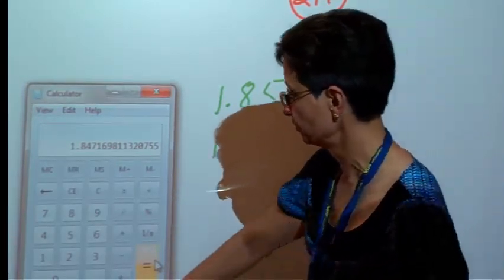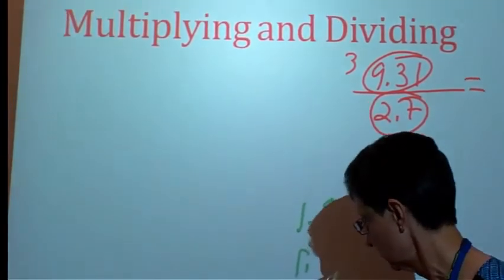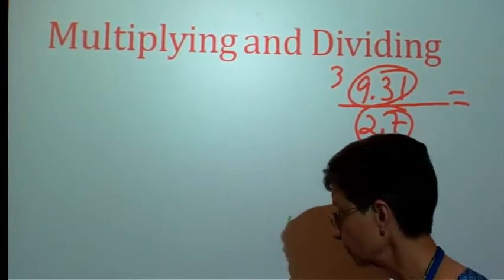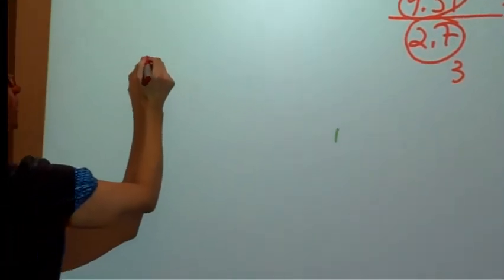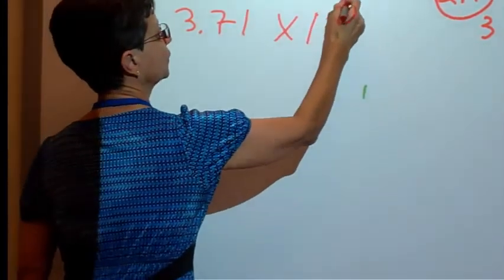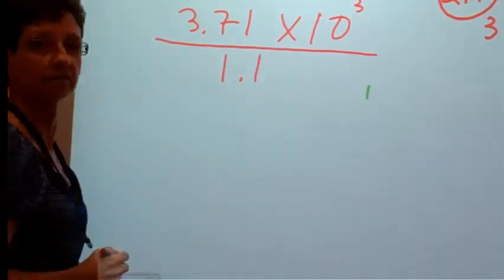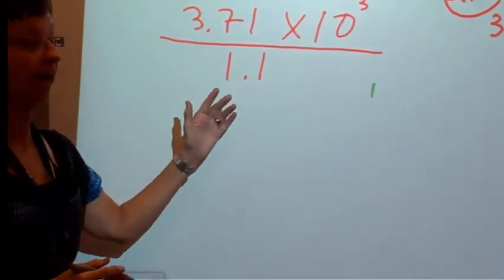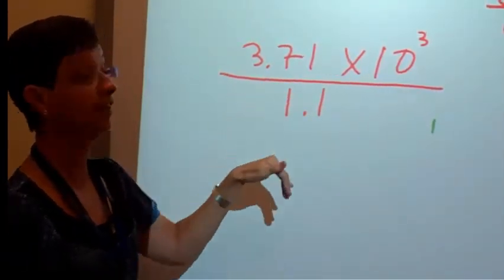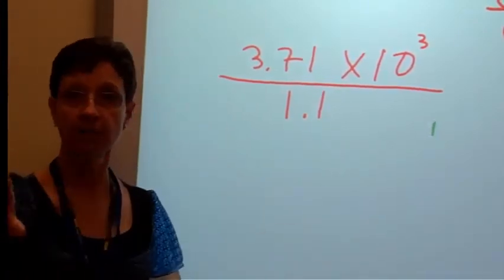One more thing I'd like to do. What if we're working with scientific notation? Say we have a number of 3.71 times 10 to the third. And we're going to divide this number by 1.1. My answer will be, I can't use my calculator here because this calculator doesn't do scientific notation, unfortunately. But just by looking at it, I know that I will have to round my answer to two significant digits. So, hold up. I'm going to get my calculator.